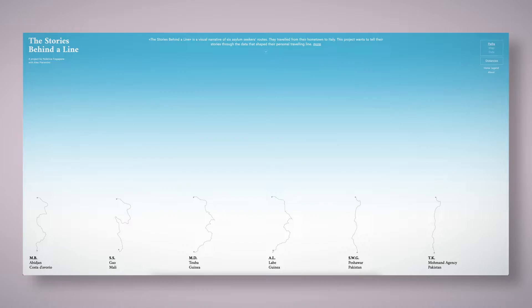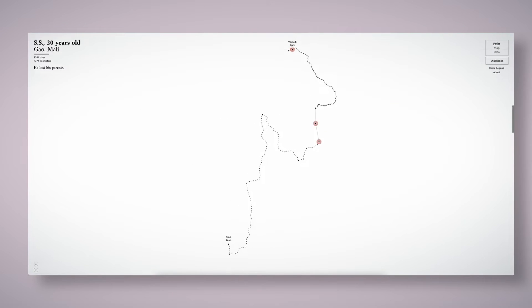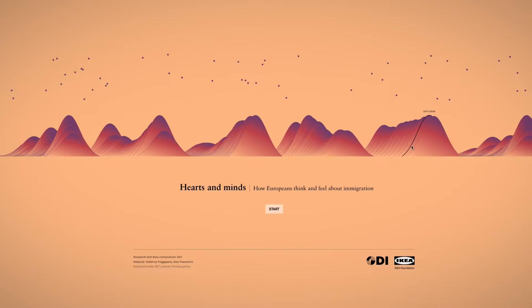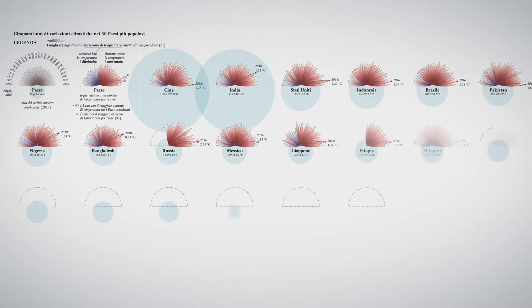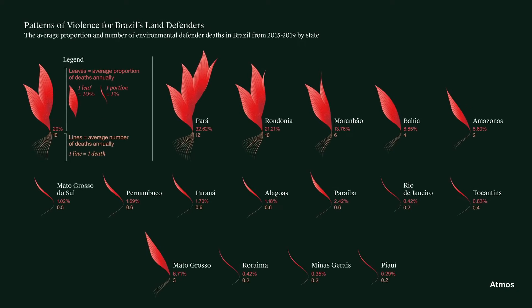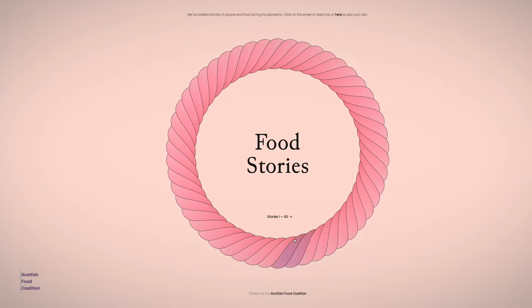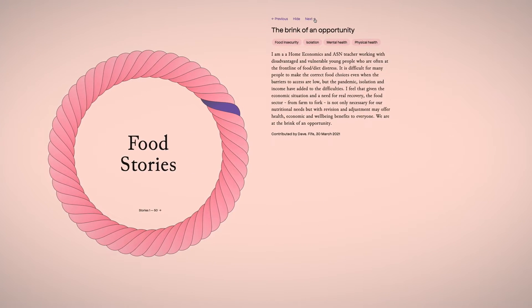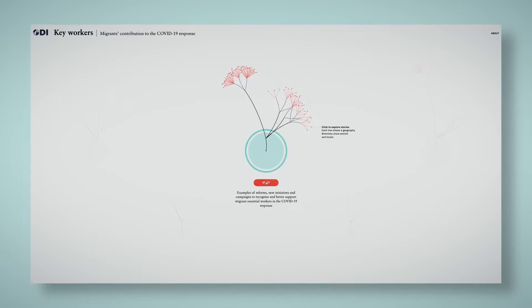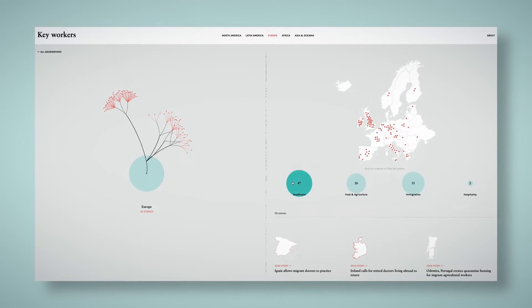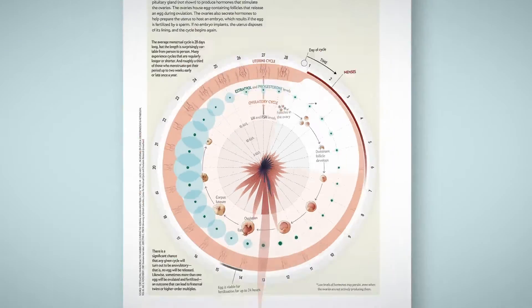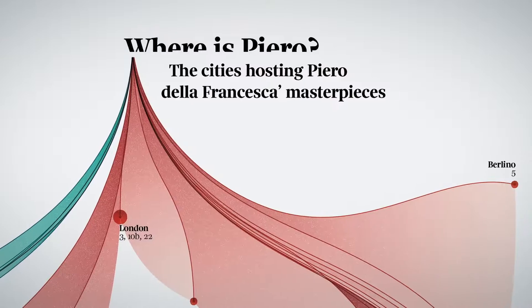One of the projects I am most fond of has been the Stories Behind the Line, a visual narrative of six asylum seekers' journeys. I am particularly passionate about using visual elements to talk about important subjects, such as migration, environment, and social matters. I try to make the most of the expressiveness of shapes. I often use organic forms that recall the world of nature to remind readers of the lives behind the data, or I look for meaningful elements that can resonate with the audience, inviting them to read my stories and engaging them.